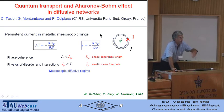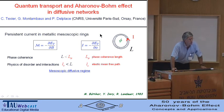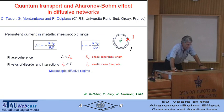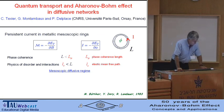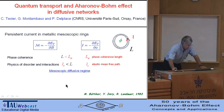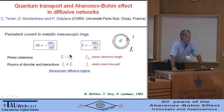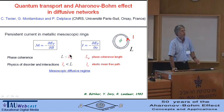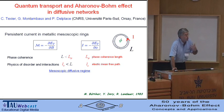The question is: what is the dependence of energy with respect to flux? To have a finite result, you actually need quantum mechanics. You need your system — the perimeter — to be smaller than some phase coherence length, below which you can do quantum mechanics.